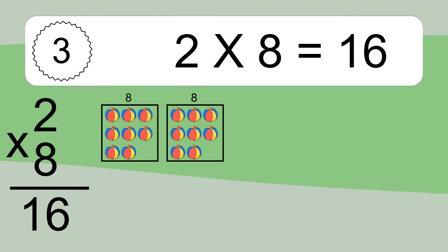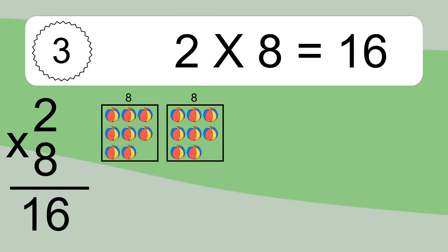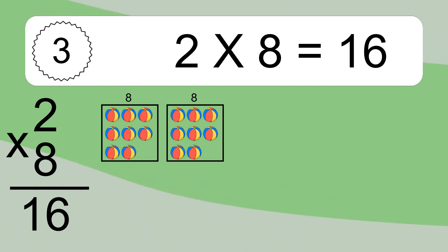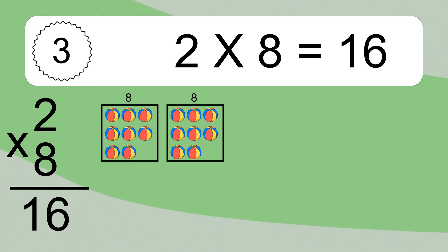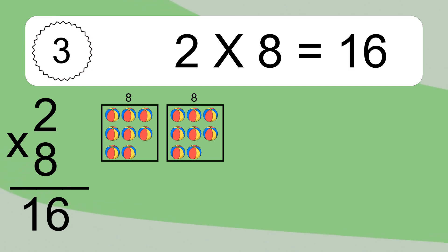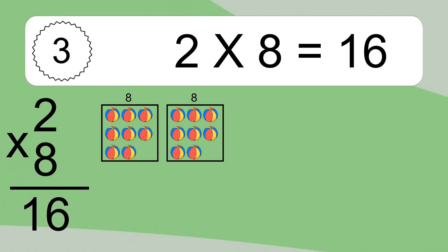2 times 8 equals what? We have 4 boxes, and each box has 8 colorful balls inside. If you count all the balls in all the boxes together, you will have 2 times 8 balls. This equals 16 balls.